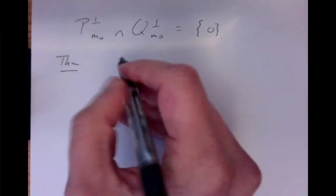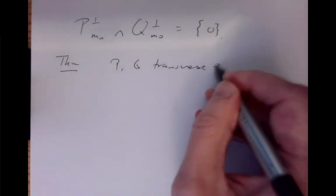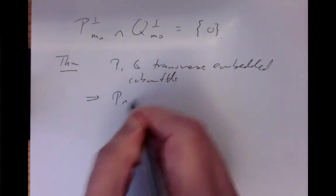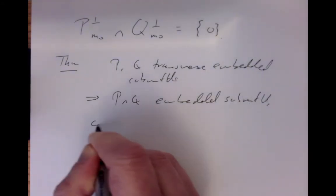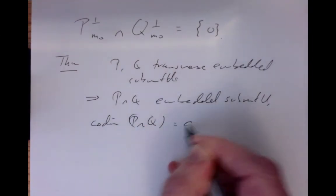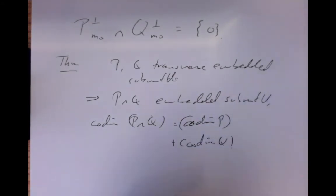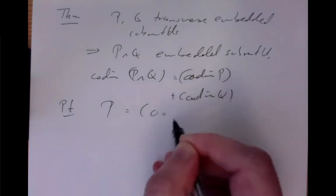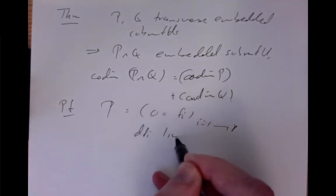The theorem — which is completely elementary — states: if P and Q are transverse embedded submanifolds, then P ∩ Q is an embedded submanifold. Furthermore, the codimension of P ∩ Q equals the codimension of P plus the codimension of Q. Codimensions are often a bit easier to work with than dimensions. In the proof: P is at least locally the zero locus of some functions fi (i = 1 to some number) with linearly independent differentials.